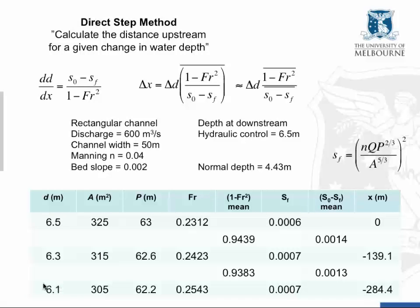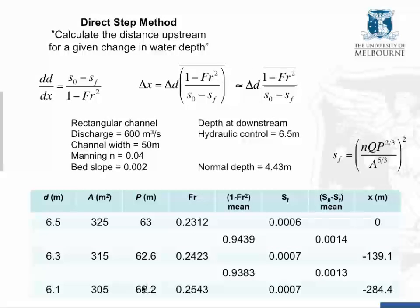We repeat that process over and over again with fixed depth reductions of 0.2 meters. The next depth is 6.1 meters, and working through gives a cumulative distance upstream of 284.4 meters. The best way to understand this procedure is to work through it yourself — it's all expressed in this one equation, applied systematically to a series of steps of unknown distance but known depth change. From this we can plot the backwater profile.